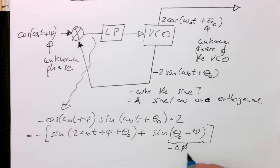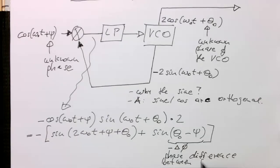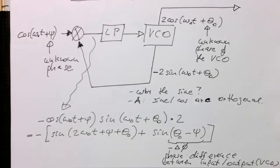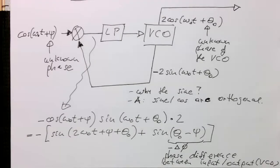So phi is our phase difference between the input and output, or essentially, or let's call this here the VCO frequency. So that's the difference here.